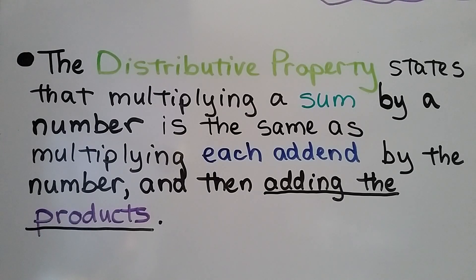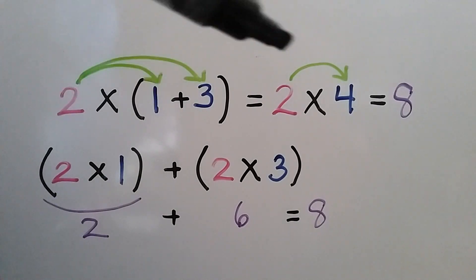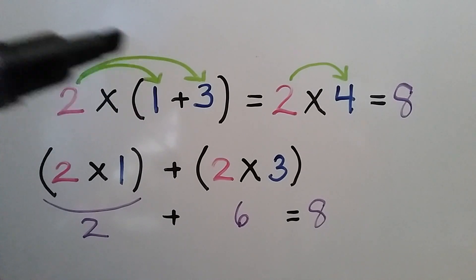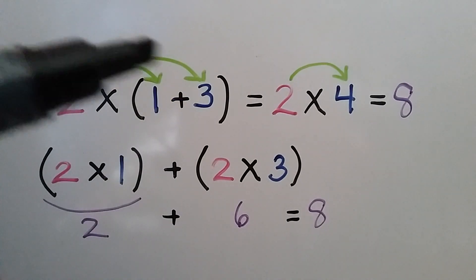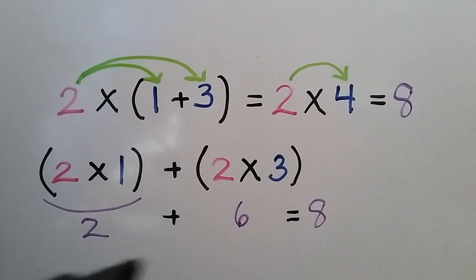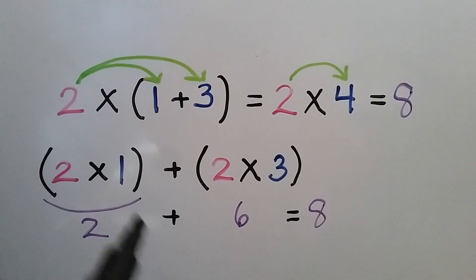The distributive property states that multiplying a sum by a number is the same as multiplying each addend by the number and then adding the products. So multiplying 2 times the sum of 1 plus 3 is the same thing as multiplying 2 times 4. They both equal 8. We can break it into 2 times 1, by distributing this 2 to the 1, and adding — because there's a plus sign — 2 times 3. 2 times 1 is 2 and 2 times 3 is 6. We add the 2 and the 6 together to get 8.